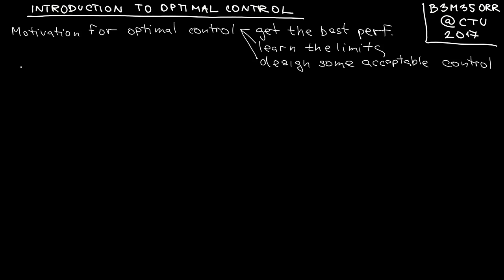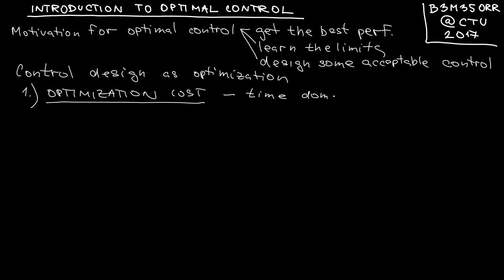In order to formulate the control design problem as optimization, we need to answer two questions. The first is what will be the optimization criterion or cost or performance index. We can formulate the cost either in time domain or frequency domain. Let's start with the time domain, maybe a bit more natural.